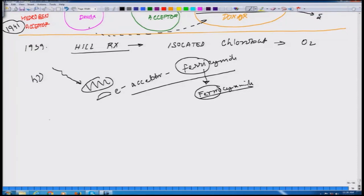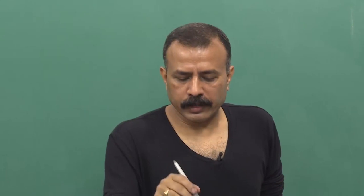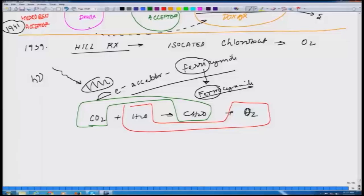He dissected photosynthesis by showing that oxygen evolution can occur without reduction of CO2. In other words, the reaction CO2 + H2O → CH2O + O2 — this reaction is independent of the other reaction. It means this H2O to oxygen evolution is totally independent as compared to the reaction of CO2 forming CH2O.